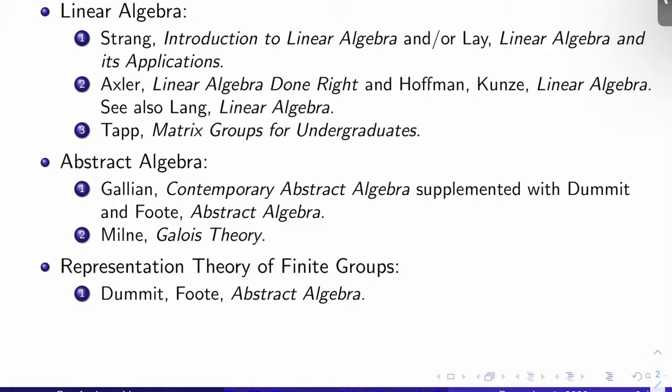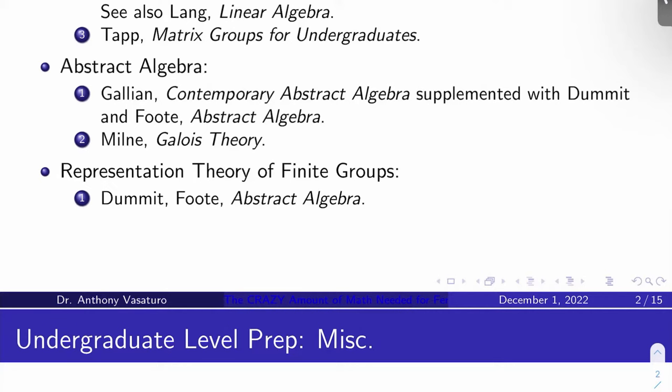You need to also begin to learn at this stage about matrix groups in and of themselves. I like Tapp's Matrix Groups for Undergraduates for that. This is in preparation for Lie theory and representation theory in Langlands program. Abstract algebra: the more algebra you know for Fermat's Last Theorem, the better. My course preps out of Gallian's Contemporary Abstract Algebra and supplements with Dummit and Foote's Abstract Algebra. You're going to need to know your Galois theory down absolutely pat. Milne's Galois theory is the place to go for that, in my opinion. Garling's book covers this. Just make sure you learn it thoroughly and comprehensively.